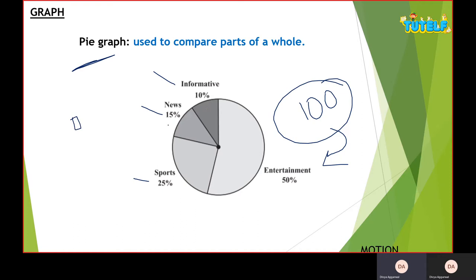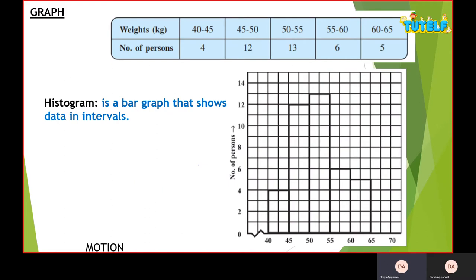If you add all these values you'll get 100, and this is how we represent a pie graph. You shade it differently and you can even make boxes here to tell that this color defines informative, this color defines this, and so on. Next is a histogram.